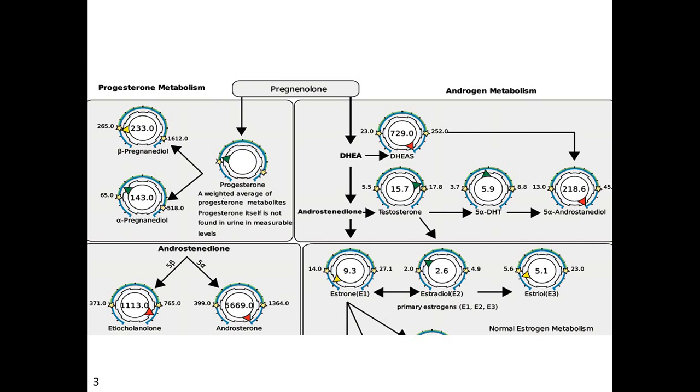With PCOS, we would expect high levels of androgens. You can see that DHEAS is well outside the reference range. Free DHEA will metabolize to androstenedione, and that will then metabolize to these two abundant metabolites. You can see there are lots of them, so we've got plenty of androgens.